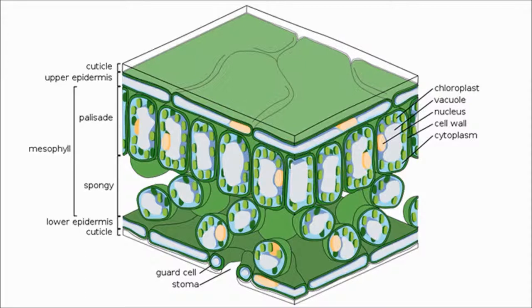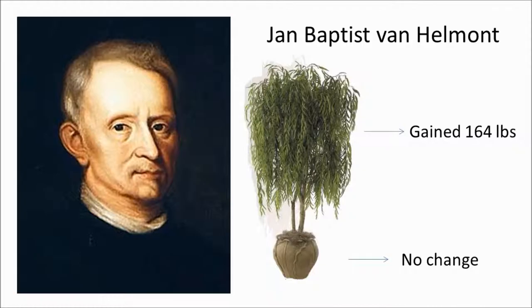Underneath this is a region called the spongy mesophyll. This has got lots of air gaps to allow the diffusion of gases in and out of the leaf. Now, let's have a look at some really clever — quite simple but clever — experiments that have been done.